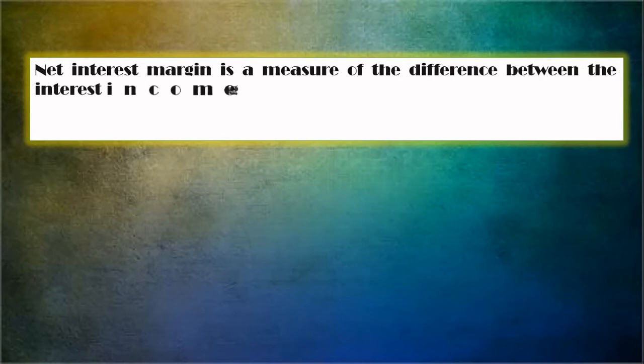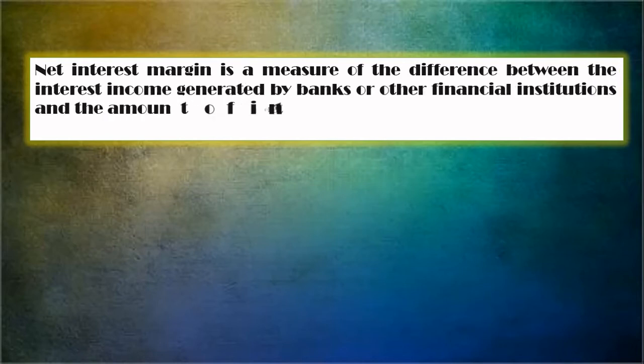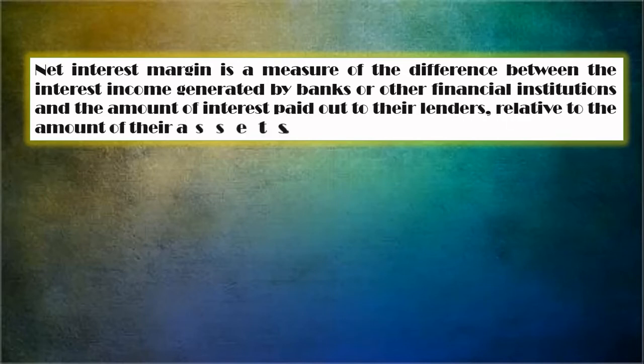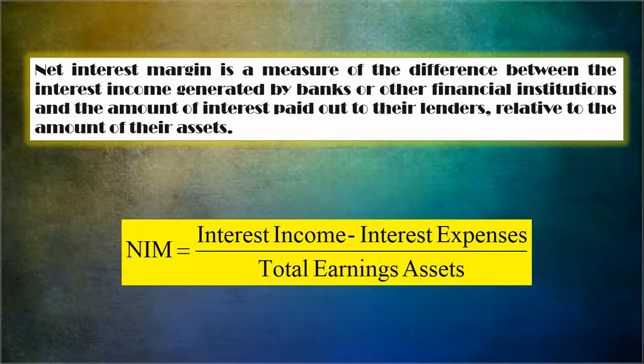Net interest margin is a measure of the difference between the interest income generated by banks or other financial institutions and the amount of interest paid out to their lenders, relative to the amount of their assets. The calculation of net interest margin is equal to interest income minus interest expenses, divided by total earning assets.